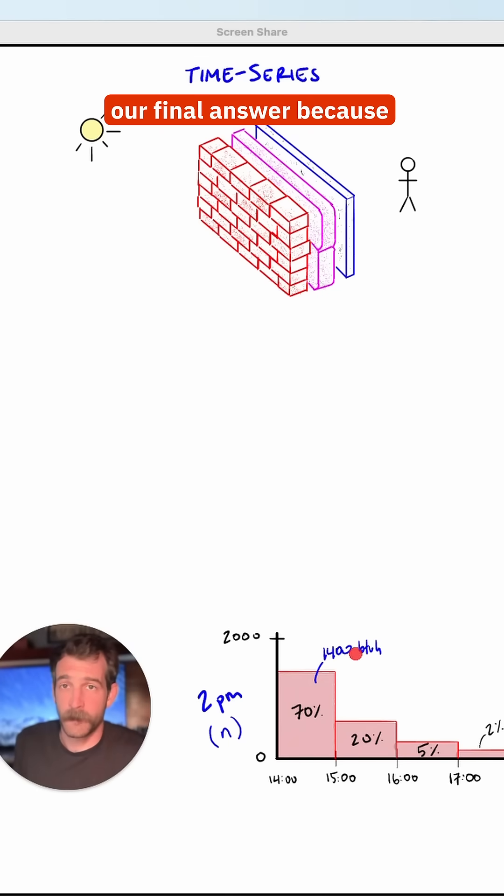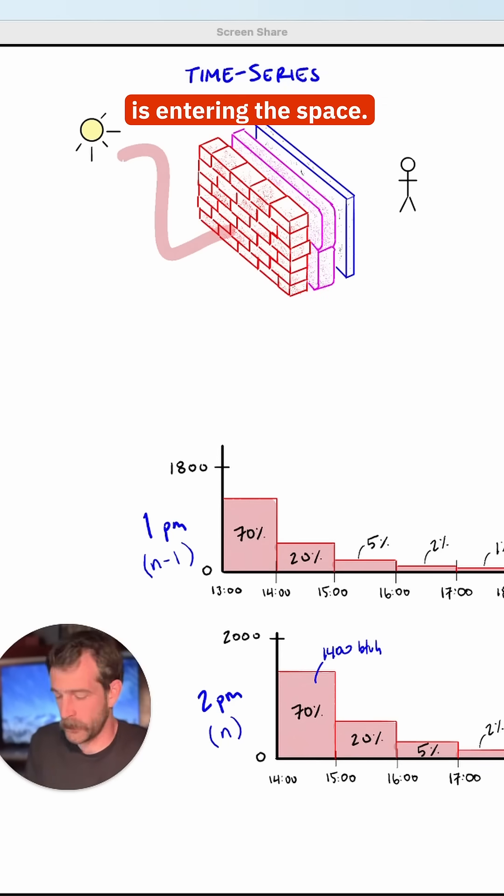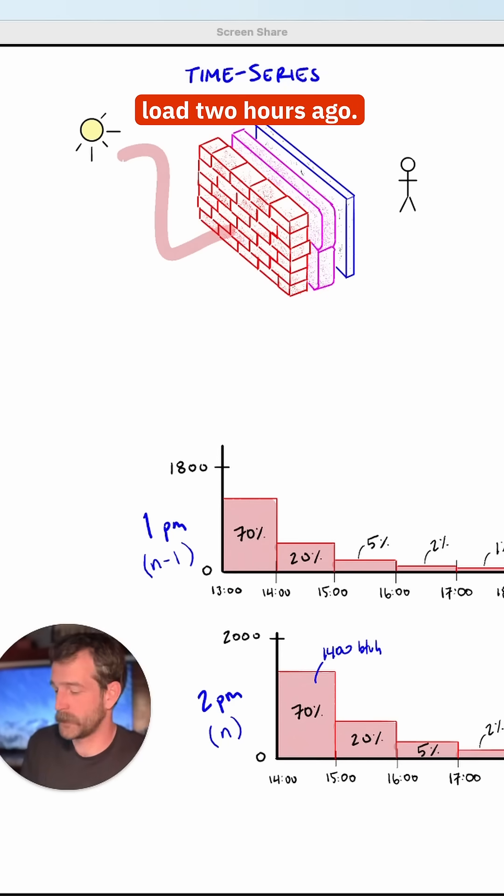But that's not our final answer because the load didn't just appear at 2 p.m. There was also a load an hour ago, and now a percentage of that load is entering the space. Likewise, there was load two hours ago, and a percentage of that is now entering the space.